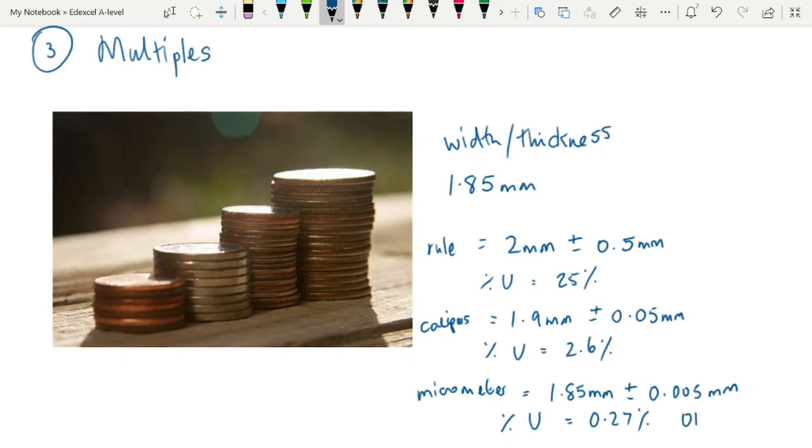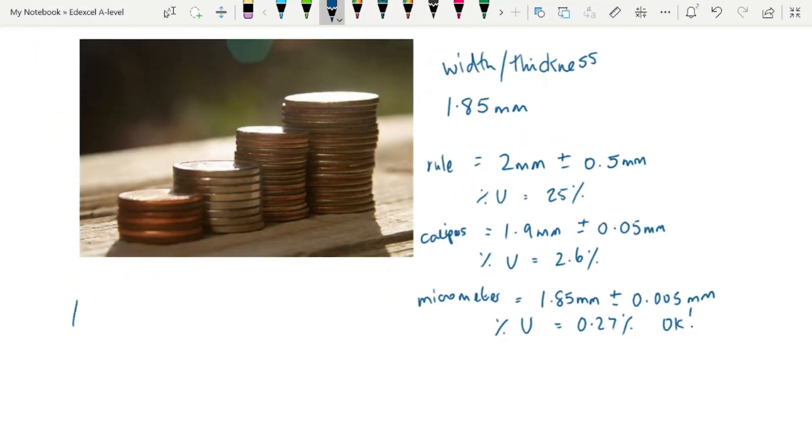Giving us a percentage uncertainty of 0.27%. Which is okay, that is not bad. There's a better way of doing it, though. If you took a stack of 10 coins.